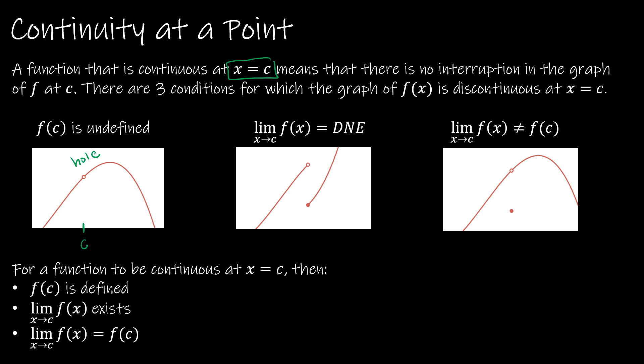The next way is that the limit as x approaches c of f of x does not exist. We've already talked about the ways in which a limit does not exist, and one of them is that the function approaches a different value from the left and from the right. So these are two different values — there is a gap in the graph.